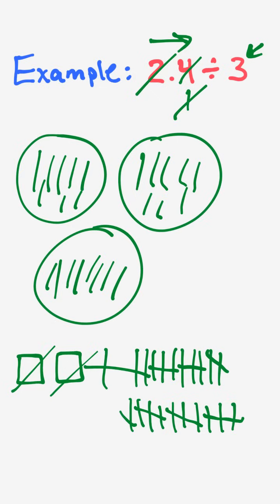The last and final step is to count what's inside one of the circles to get our answer. I have one, two, three, four, five, six, seven, eight tenths inside one of the circles, and this is how you write eight tenths. Therefore, this is our answer.